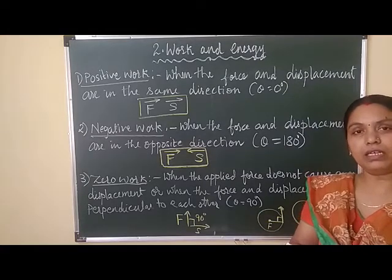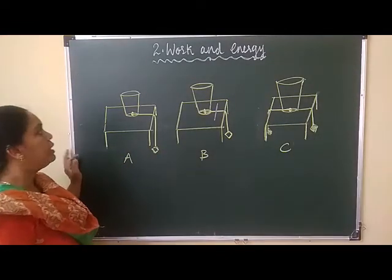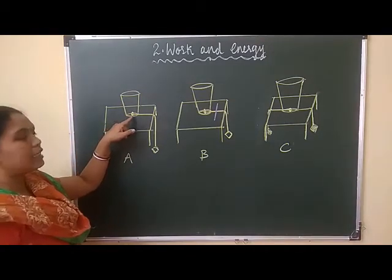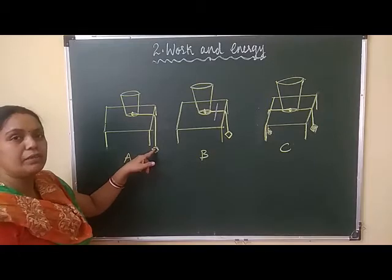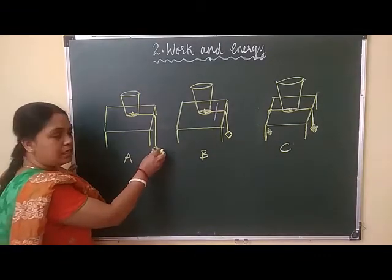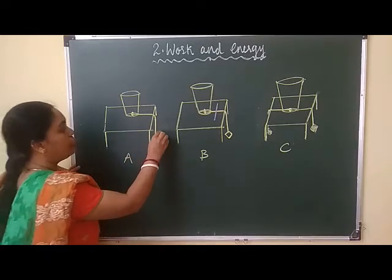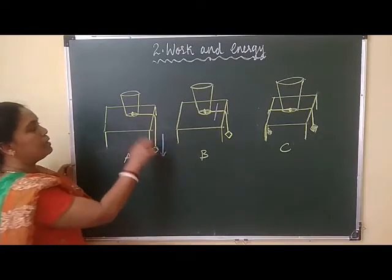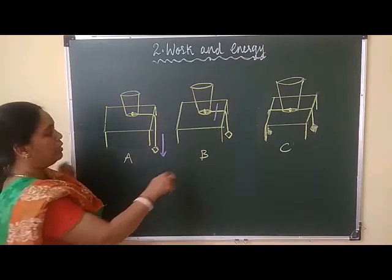Let us understand the figures. In figure A, there is a plastic glass with a hole made in the center of its bottom, with a knot and a thread. The thread is hanging with the help of a heavy nut. The nut is heavy, so as the nut gains weight due to gravity, the force is towards the ground and there is displacement — the glass comes down with the nut.